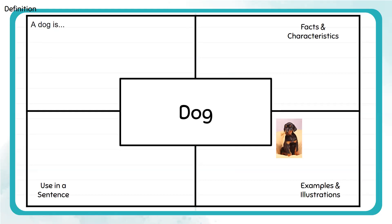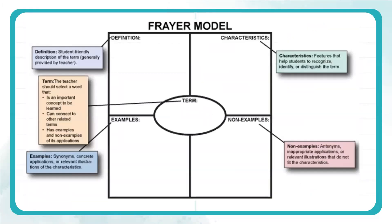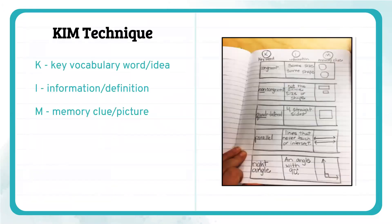Here's a simple primary example of how you can connect vocabulary using the Frayer method. The word 'dog' — using facts and characteristics, a sentence, an example, and an illustration. The Frayer model can also be done with Jamboards — you could insert this in your Google Classroom and allow students to add their answers in groups, independently, or as a whole group activity. A KIM technique is another way to incorporate the keyword, information, and the memory clue or picture. Students can start a lesson with a word of the day using a keyword, then provide information and a memory clue or picture.